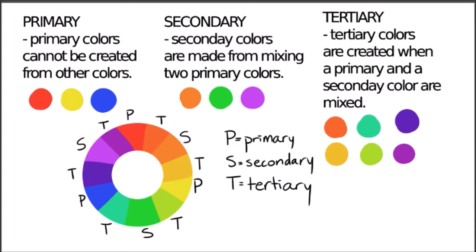Red and blue make purple. The tertiary colors are created when a primary and a secondary color are mixed. The colors are red-orange, yellow-orange, yellow-green, blue-green, blue-violet, and so on.